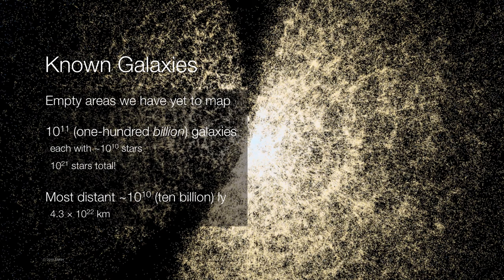So 10 billion stars times 100 billion galaxies gives us 10 to the 21st stars total. There are more stars in the universe than there are grains of sand on all the beaches on Earth.